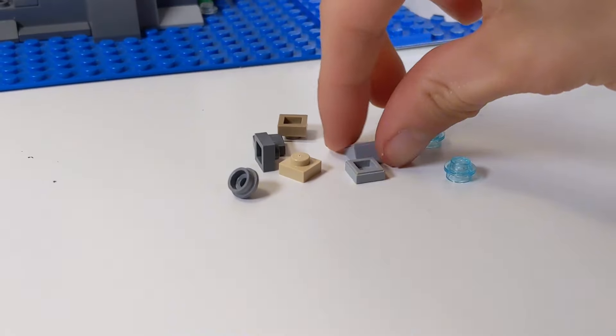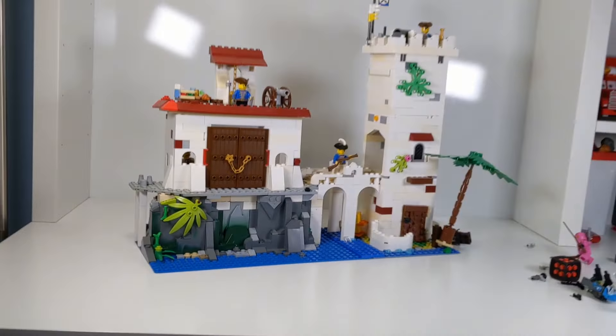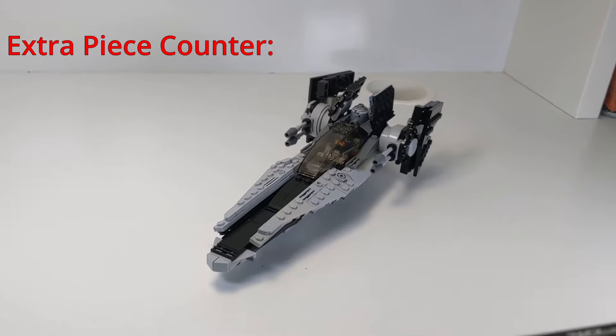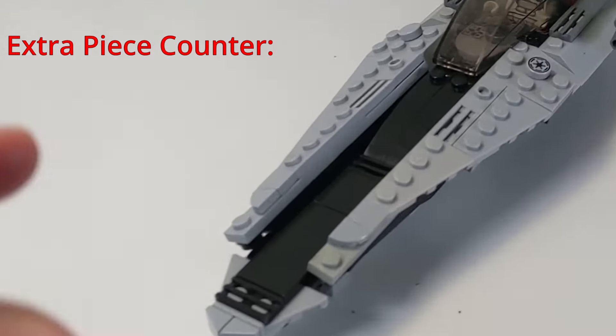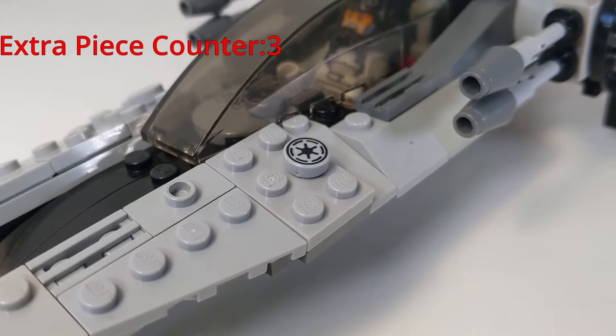You can also use cheese slopes, tiles, plates, and studs to detail your latest mock. So let's see how many extra pieces I was able to sneak in my latest mock, the V-wing. I have some one by one tiles here that are curved, then the Republic insignia which is from a LEGO set from 2014.